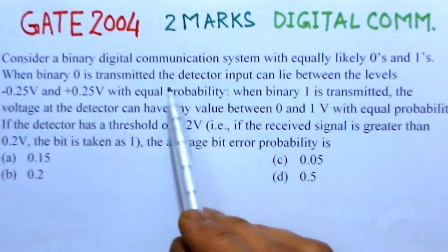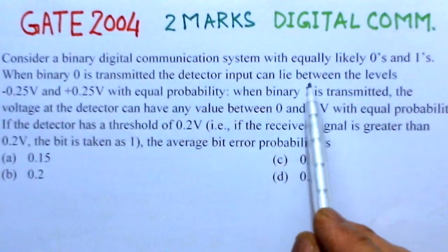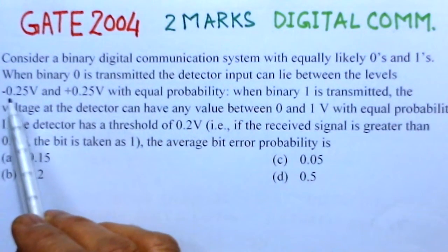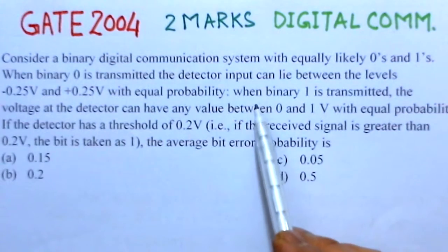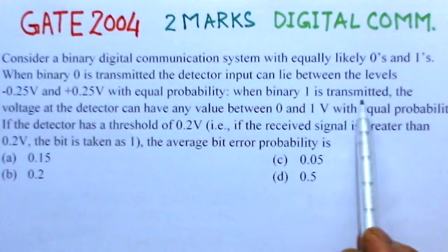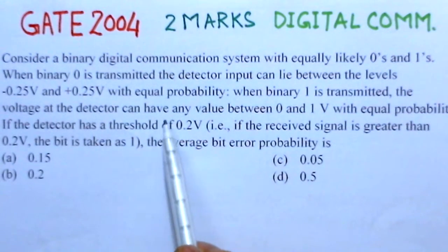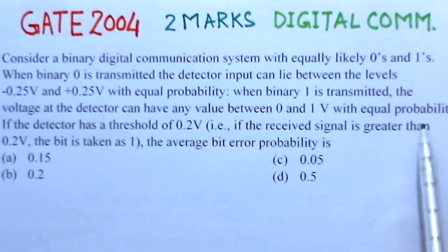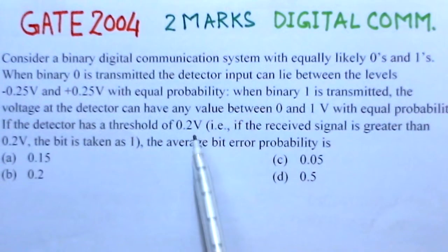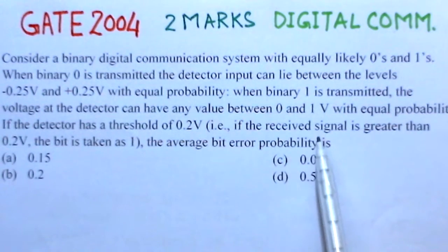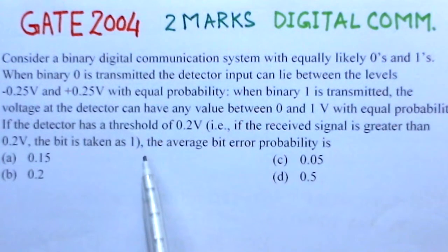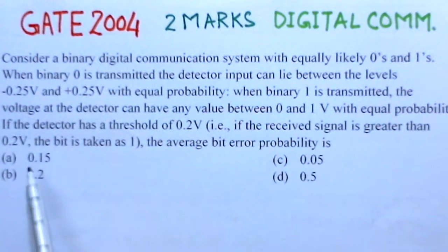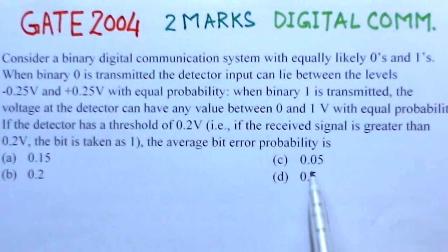When binary zero is transmitted, the detector input can lie between the levels minus 0.25 and plus 0.25 with equal probability. When binary one is transmitted, the voltage of the detector can have any value between 0 and 1 with equal probability. If the detector has a threshold of 0.2 volts, that is the received signal is greater than 0.2 volts, the bit is taken as one.